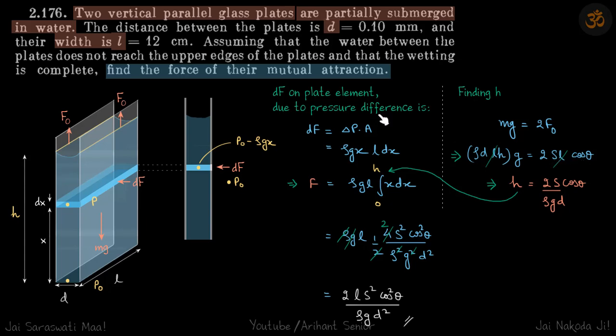Here there is glass in water, so cos theta will be one, but let's arrive at a general solution with a given cos theta. f naught is sL cos theta, so h becomes 2s cos theta divided by rho gd.